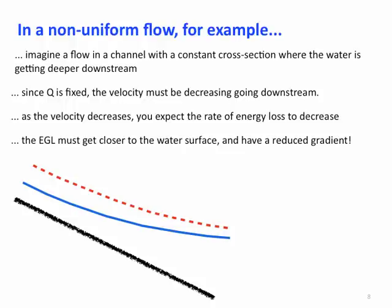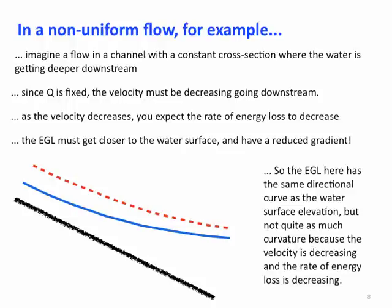So the dashed red line here shows a possible EGL consistent with the water getting deeper going downstream. Here the EGL has the same directional curve as the water surface elevation, but not quite as much curvature because the velocity is decreasing. Note that the rate of energy loss is decreasing as compared to the energy loss that would be implied by a uniform flow where the energy grade line is parallel to the bottom slope.